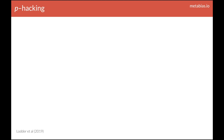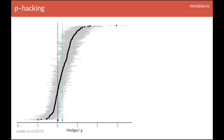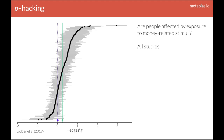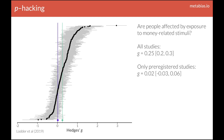Next, let's turn to p-hacking. The example meta-analysis we're going to use looked at studies of money priming, which investigate whether exposure to money-related stimuli can affect people's thoughts, feelings, motivations, and behaviors. Among all of the studies in the meta-analysis, the estimated effect was a Hedges' G of 0.25. But on the subset of studies that had been pre-registered, the effect was just 0.02. This difference raises suspicions that non-pre-registered studies could have been subject to p-hacking.